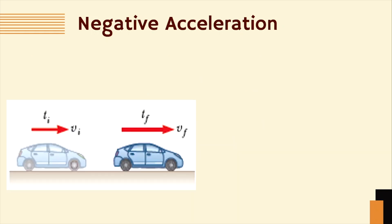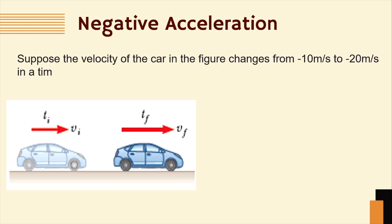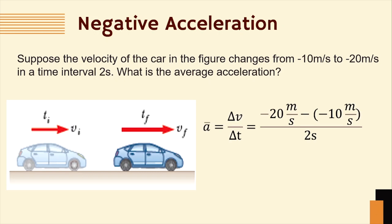Suppose the velocity of the car changes from -10 m/s to -20 m/s in a time interval of 2 seconds. The average acceleration is equal to -20 m/s minus -10 m/s divided by 2 seconds. The answer is equal to negative 5 meters per second squared.